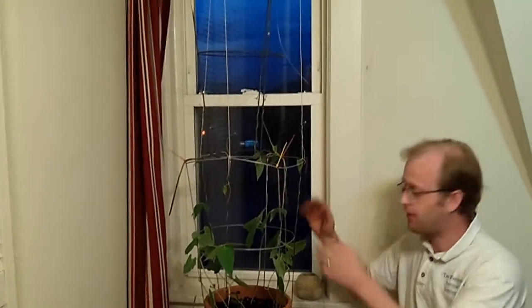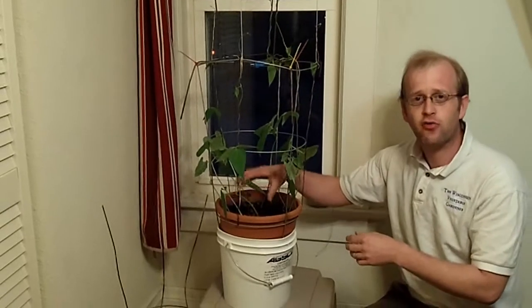We planted these about three weeks ago. We've got Kentucky Wonder pole beans on the outside, as well as a couple of organic soybeans on the inside.